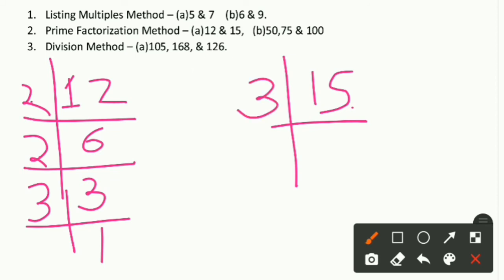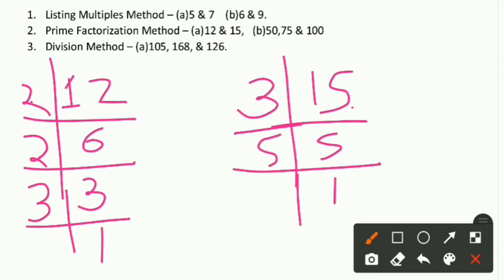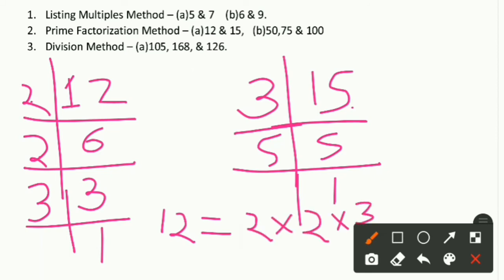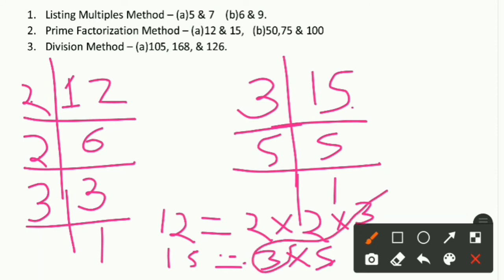So we write the factors: 12 = 2 × 2 × 3, and 15 = 3 × 5. Now we look for common factors of 12 and 15. The only common factor is 3. We now prepare to calculate the LCM by using the common factor and the remaining factors.